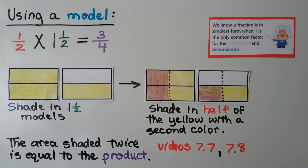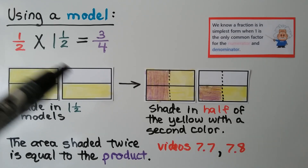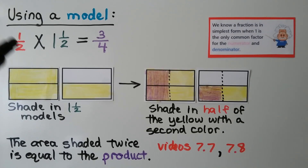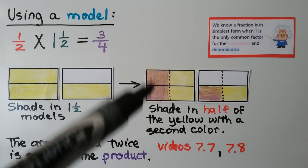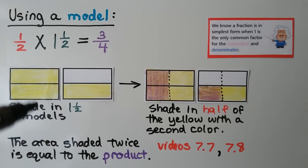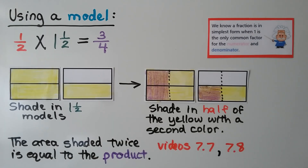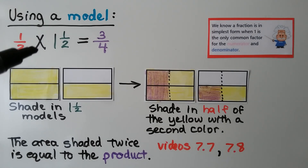Using a model, we have 1 half times 1 and a half. We shade in 1 and a half models — the second factor. We're multiplying by a half, so we shade in half of the yellow with a second color, shading half of each portion. The area shaded twice equals the product. We know that 1 half times 1 and a half equals 3 fourths — 1 fourth, 2 fourths, 3 fourths. We learned this in videos 7.7 and 7.8, linked in the description.